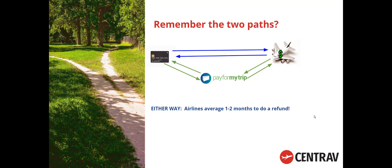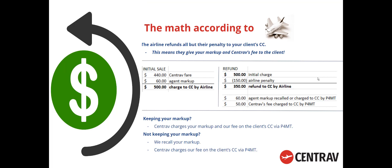Remember the two paths? Let's look at the other path going directly from the airline back to the credit card. Here's what the math looks like: initial charge $440, agent markup $60, total charge $500. When the airline goes to refund this, they don't think about you and they don't think about Centrav — all they think about is their own penalty. So they deduct $150 for their penalty and refund everything else to the credit card.